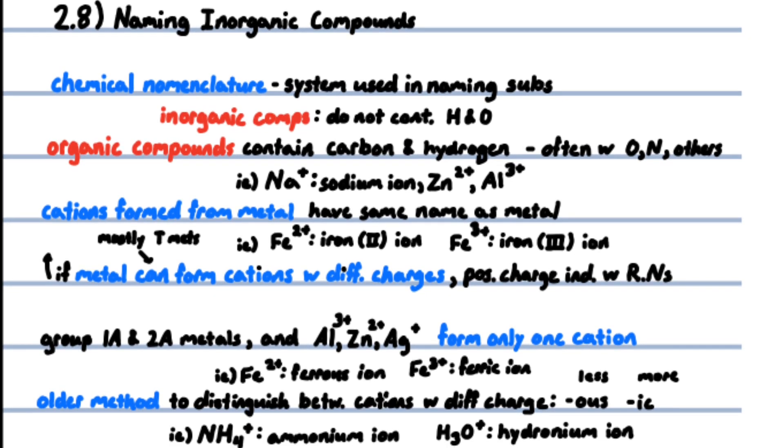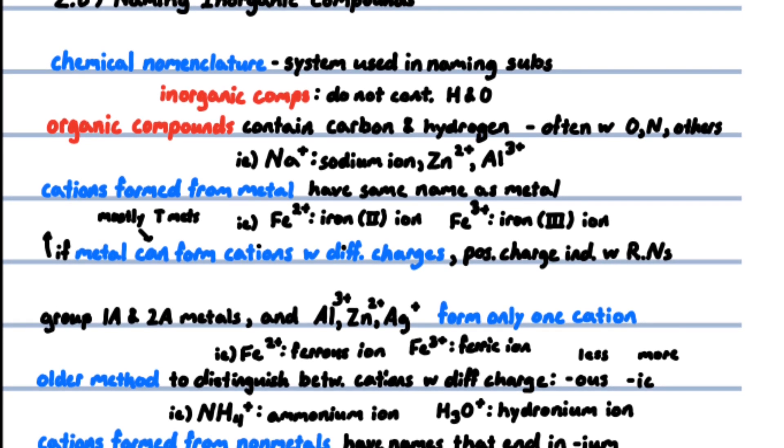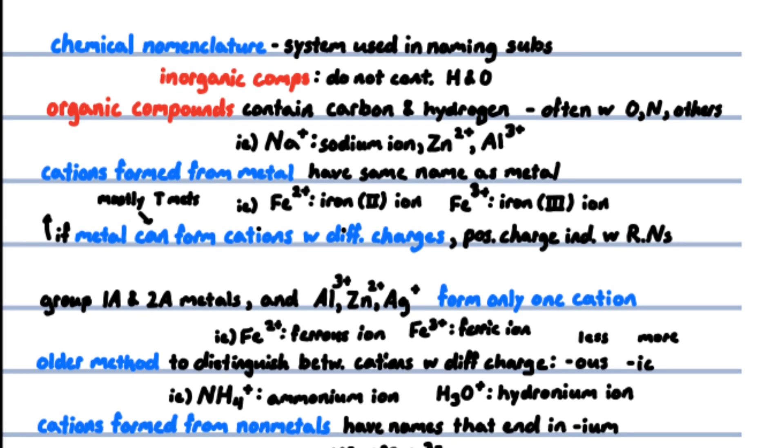The system used in naming substances is called chemical nomenclature. Organic compounds contain carbon and hydrogen, often in combination with oxygen, nitrogen, or other elements. All other compounds are inorganic.